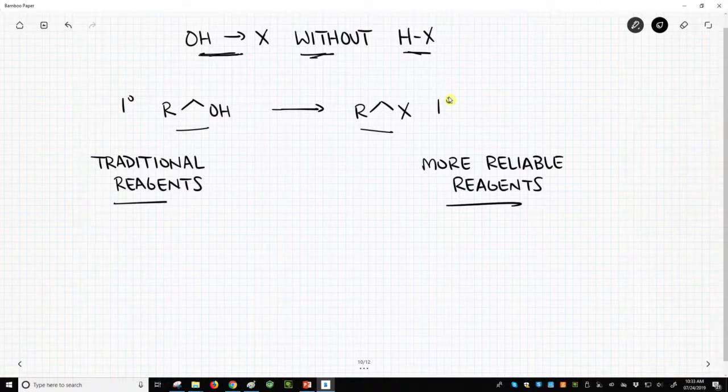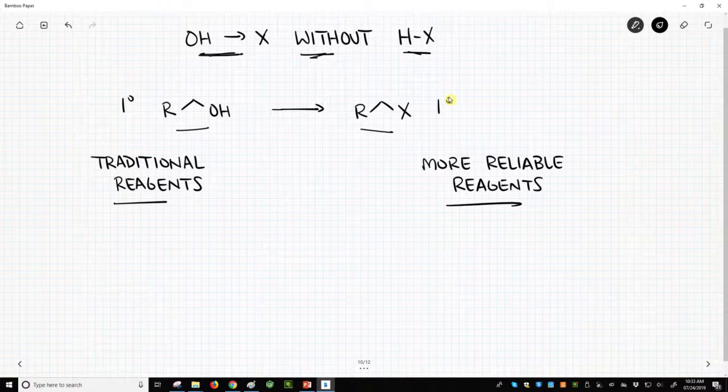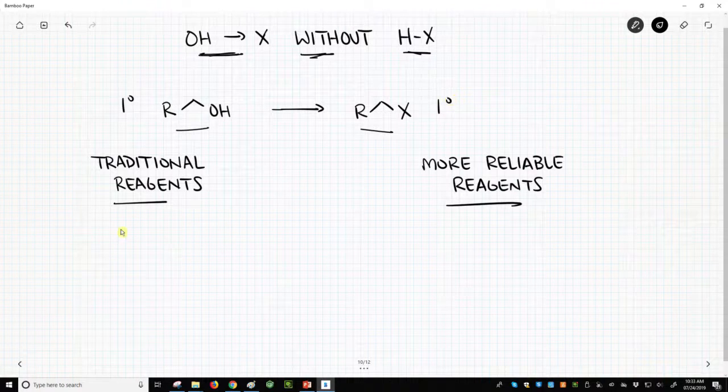There's a different set of reagents you can do for this. There's the traditional reagents. These are in all the textbooks. You'll find them all over the web. To convert the alcohol into a chloride,